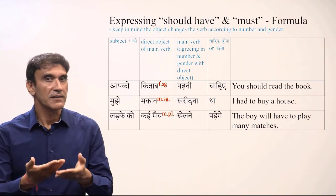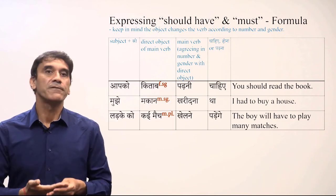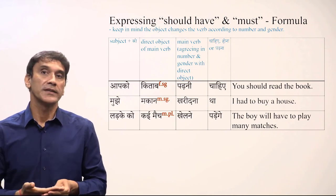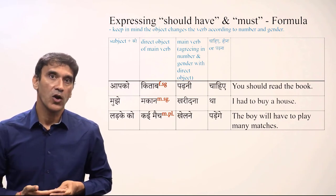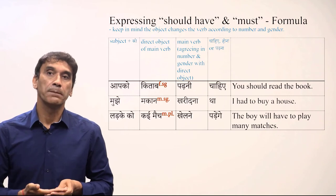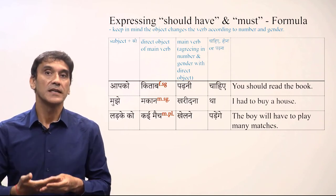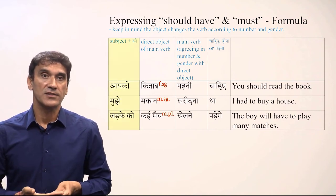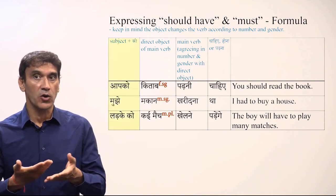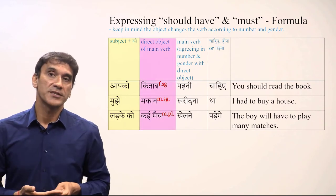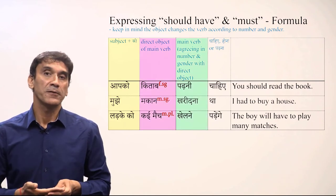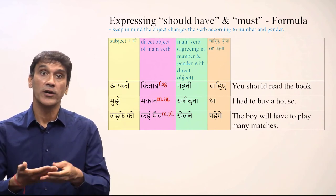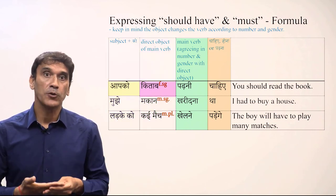Let's now take sentences with a grammatical object. The verb form will be dictated by the number and gender of the object, and the subject takes the postposition ko. Here is the formula for all compulsion constructions: the subject takes ko, then comes the direct object, then the main verb, and at the end the compulsion phrase — chahiye, hona, or parna.